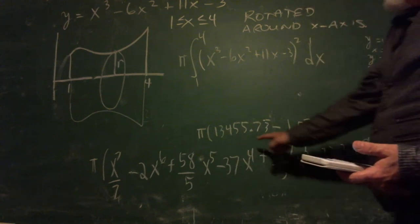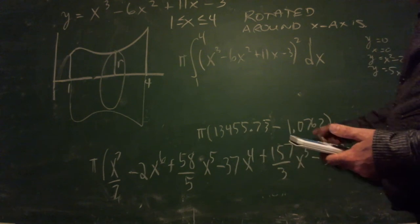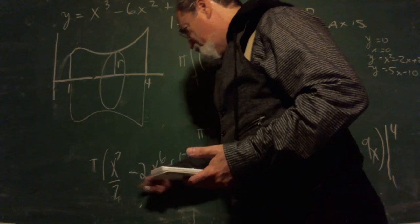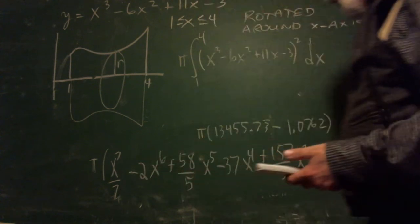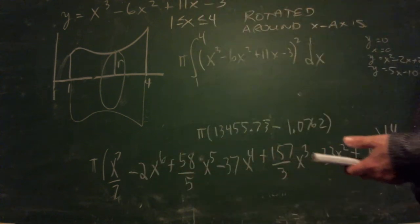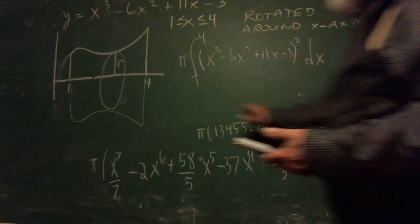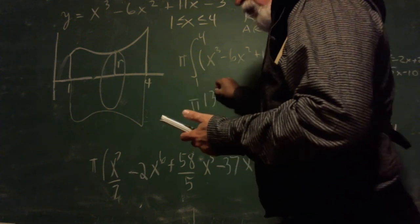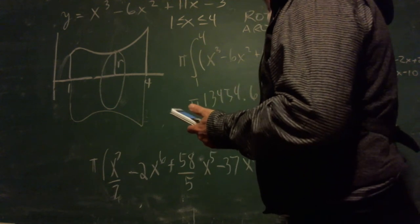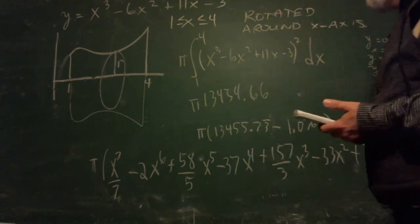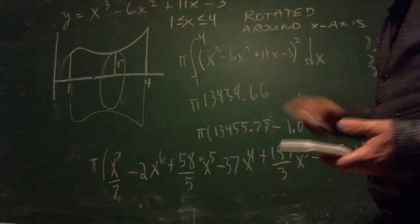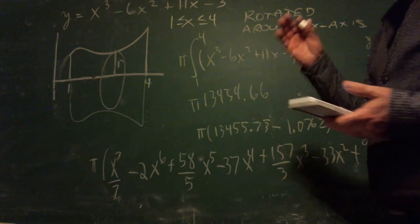When I did it on my calculator, these numbers are brutal. Putting in the 4, I got this 13,000 number. Putting in the 1 is nice because all these x's become 1's - it's just 1/7 minus 2 plus 58 over 5, et cetera, all the way down. You just use the coefficients. Final answer: pi times 13,454.66. So it's the volume of this particular revolution solid, sort of like a butternut squash with the ends cut flat.